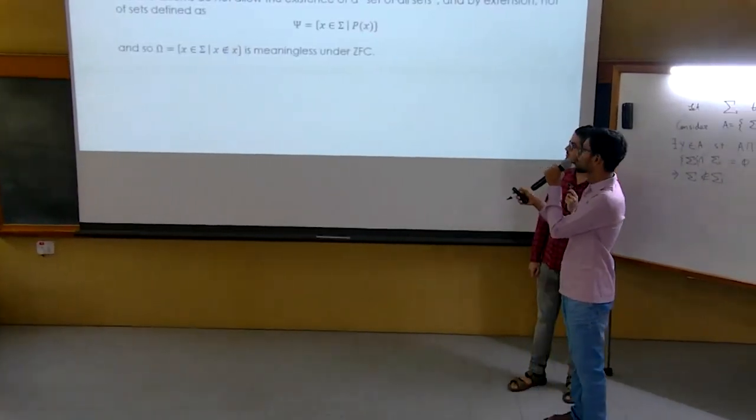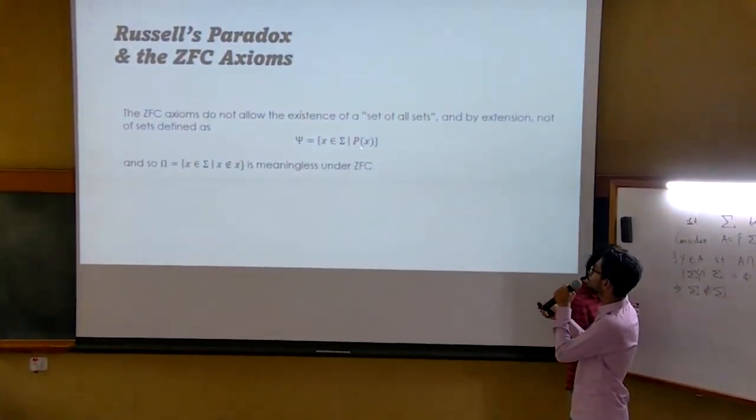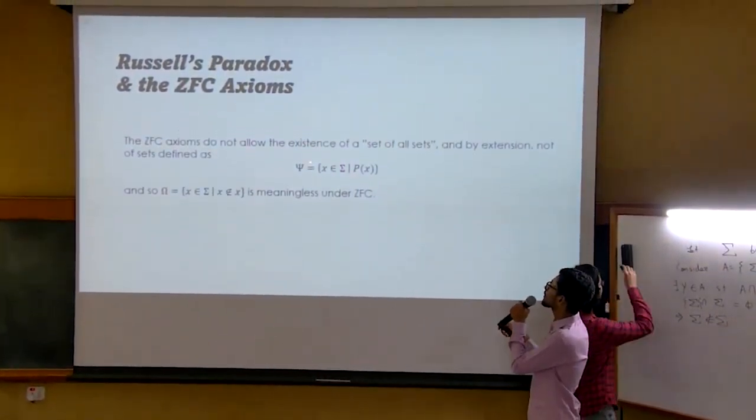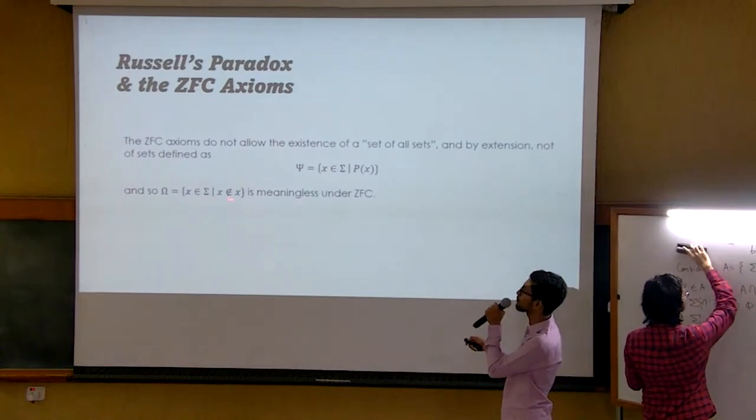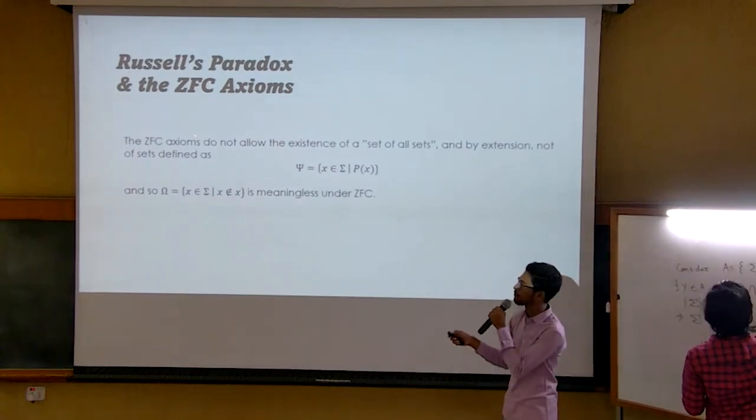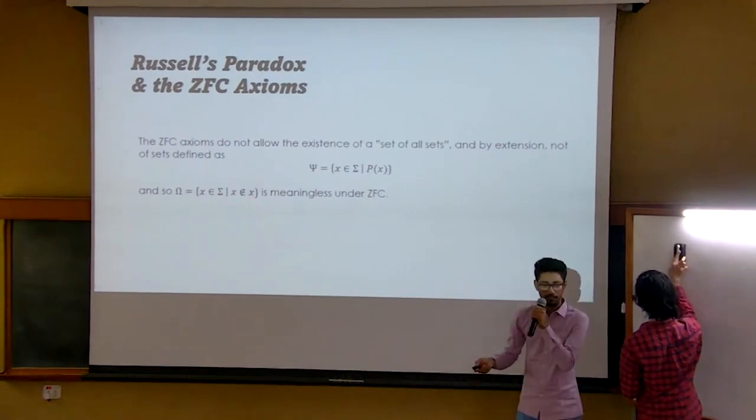So the proof shows that we cannot create a set of all sets. So we cannot create any set psi from the set of all sets with any property phi. So omega is also meaningless under ZFC because we are taking the universal set which does not contain itself.